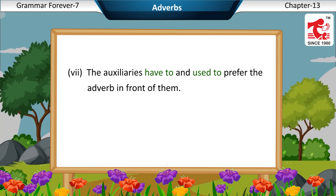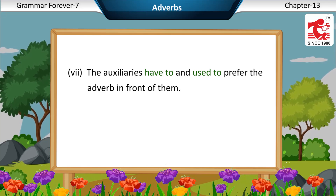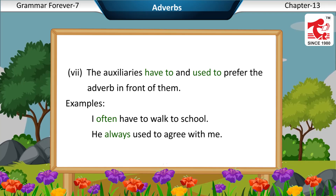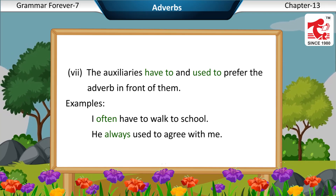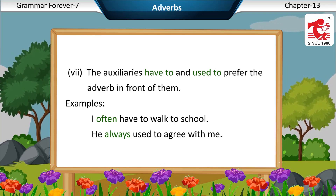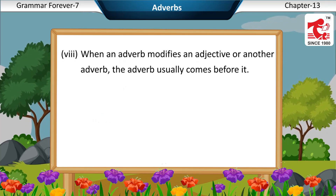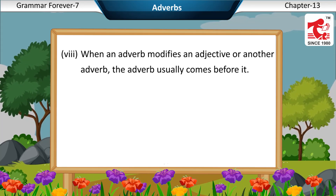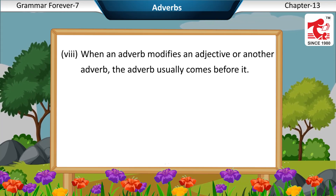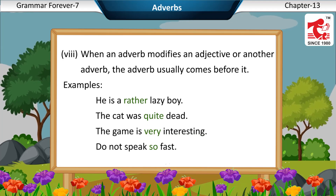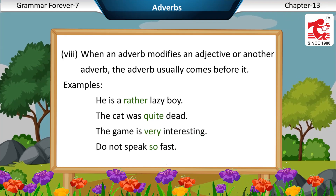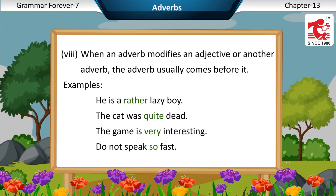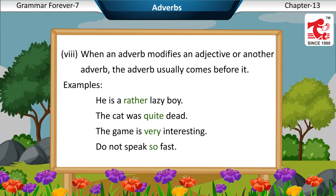Seventh, the auxiliaries 'have to' and 'used to' prefer the adverb in front of them. Examples: I often have to walk to school. He always used to agree with me. Eighth, when an adverb modifies an adjective or another adverb, the adverb usually comes before it. Examples: He is a rather lazy boy. The cat was quite dead. The game is very interesting. Do not speak so fast.